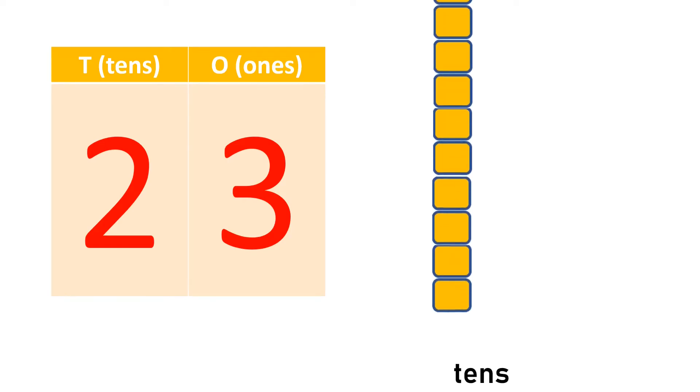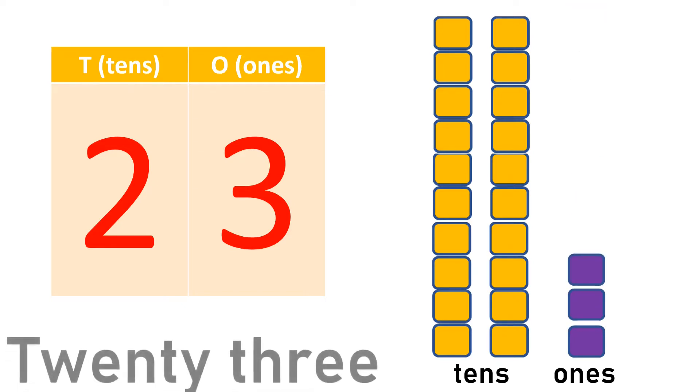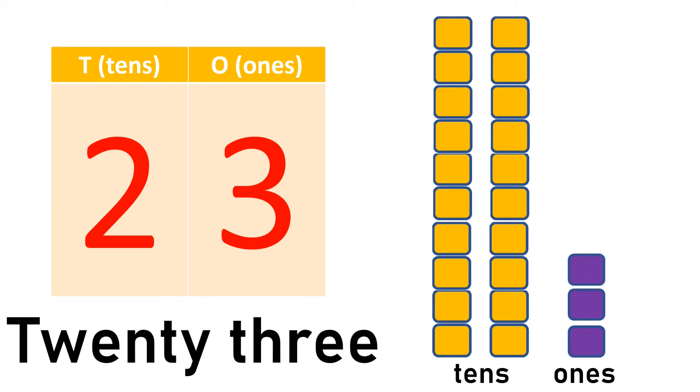2 tens and 1, 2, 3, 3 ones makes 23, TWENTY-THREE.